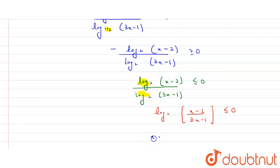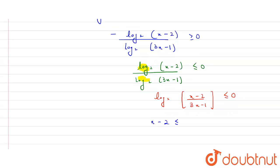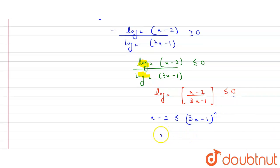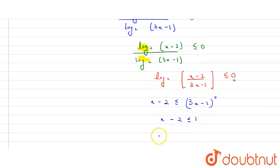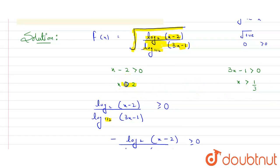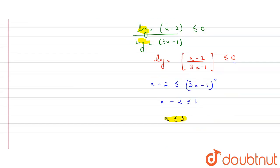From this, taking the antilog, (x minus 2) divided by (3x minus 1) is less than or equal to 2 raised to the power 0, which equals 1. So x minus 2 is less than or equal to 3x minus 1, which gives x less than or equal to 3. Combined with our earlier condition x greater than 2, we get x is greater than 2 and less than or equal to 3.